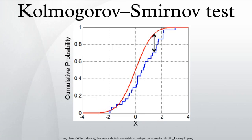By the Glivenko-Cantelli theorem, if the sample comes from distribution F, then Dn converges to 0 almost surely in the limit when n goes to infinity. Kolmogorov strengthened this result by effectively providing the rate of this convergence. Donsker's theorem provides yet a stronger result.